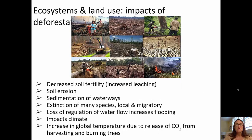Additional impacts of deforestation include leaching. If you take away the plants, there is more opportunity for rainwater to leach away soils, which decreases soil fertility, increases soil erosion, and increases sedimentation in waterways. It can cause the extinction of species, both local and migratory. There's a loss of regulation of water flow, which increases flooding in local areas, and it can impact climates by not providing opportunities for carbon storage. Global temperatures can increase because of the release of carbon dioxide from harvesting and burning those trees.